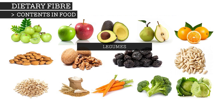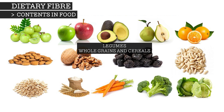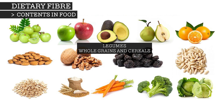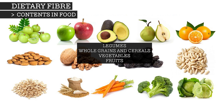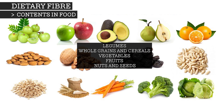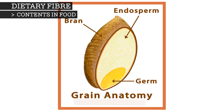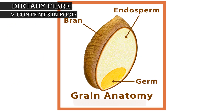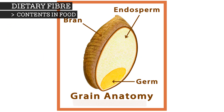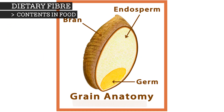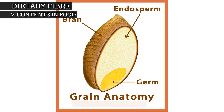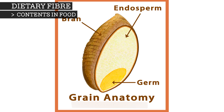Dietary fibre is found in legumes, whole grains and cereals, vegetables, fruits, nuts and seeds. Grain bran, which is the hard outer layers of cereal grains, tends to have the highest insoluble fibre contents.